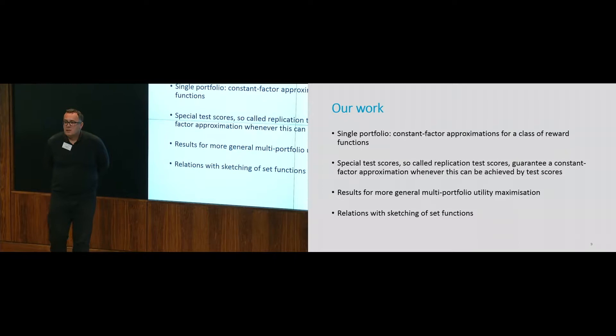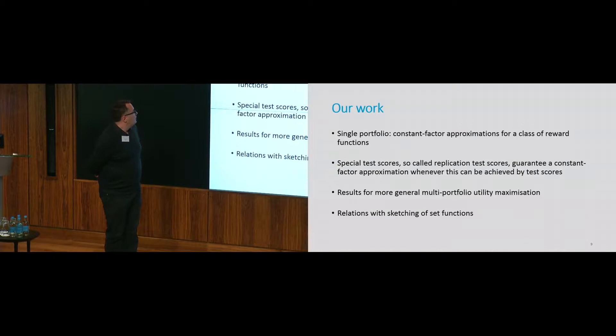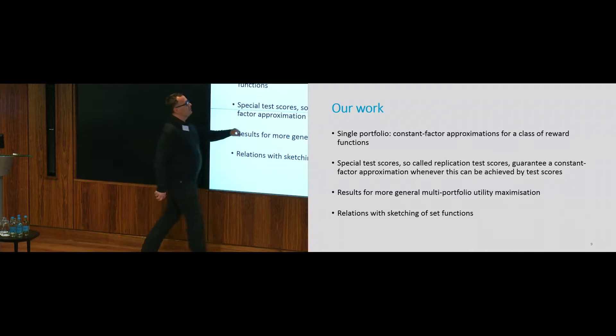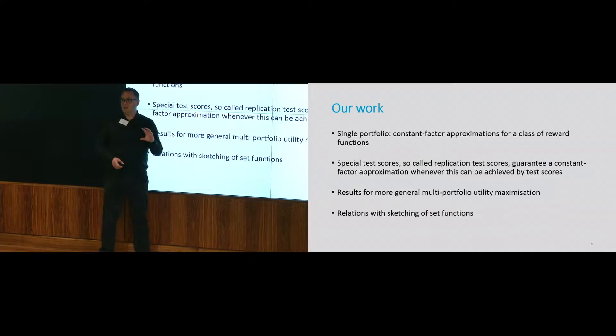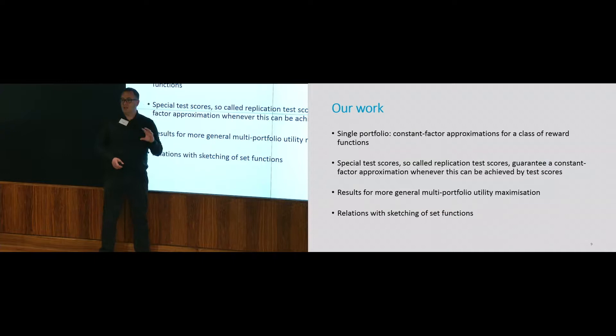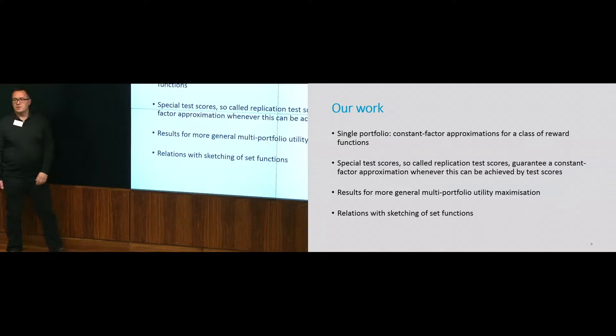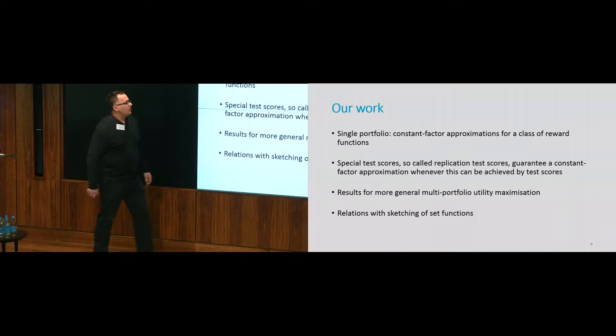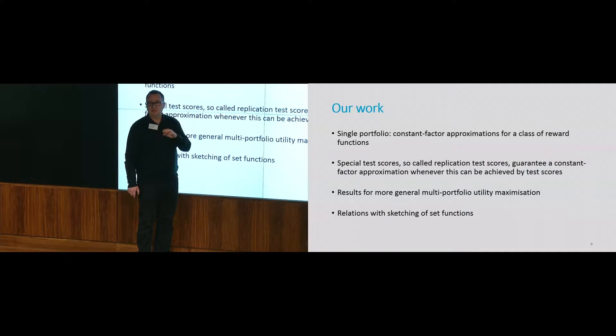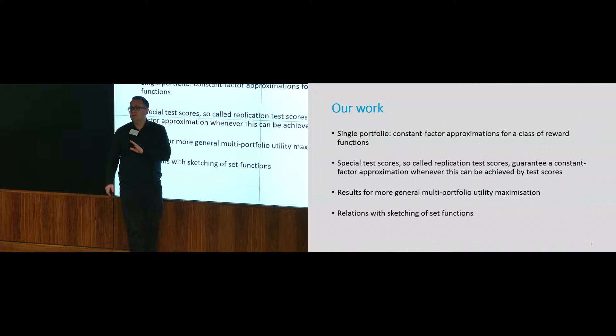To clarify: the test scores need to be found — you need to define them in a good way. There are two things to decide: how you define your test scores, and what your algorithm is. I'm saying you can find good test scores and define your algorithm so that it guarantees a constant factor approximation. The reward functions are given; you need to restrict to an appropriate class of functions.